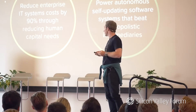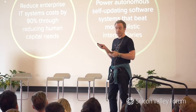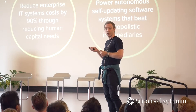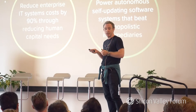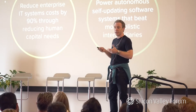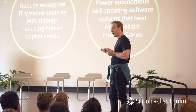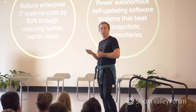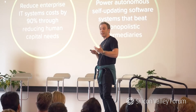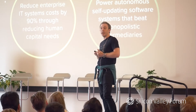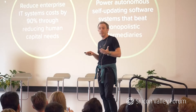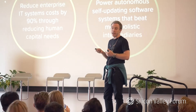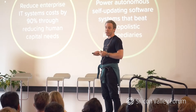The two big objectives of DFINITY are: one, to reduce enterprise IT system costs by around 90% through reducing the need for supporting human capital — that's quite a specific objective rather than just 'it's a blockchain.' The other is to create, or enable the creation of, self-updating software systems that can replace monopolistic intermediaries. You might imagine a software system that plays the role of Uber, for example, matching drivers and riders. And as we'll see, you can also create banking systems using this kind of technology.